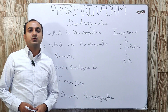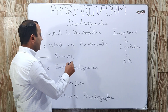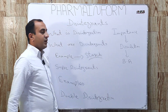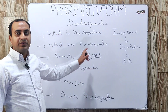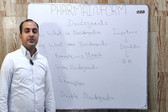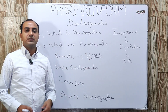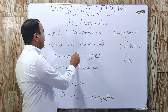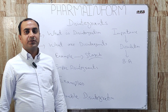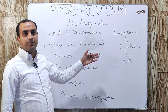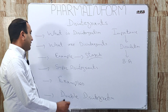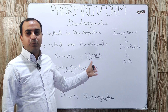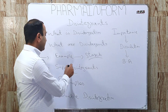A commonly used disintegrant is starch. Starch is one of the most commonly used conventional disintegrants and is used at a concentration of about 5 to 15%. This means conventional disintegrants are used in large quantities to produce the effect of tablet breakdown.